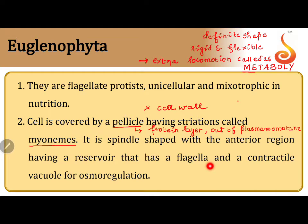Euglena has two flagella — we all know this — and through flagella it performs locomotion. But Euglena also has another kind of locomotion called metaboly, and the pellicle is responsible for this metaboly. The structure of the pellicle responsible for this extra locomotion is called myonemes, or spasmonemes.